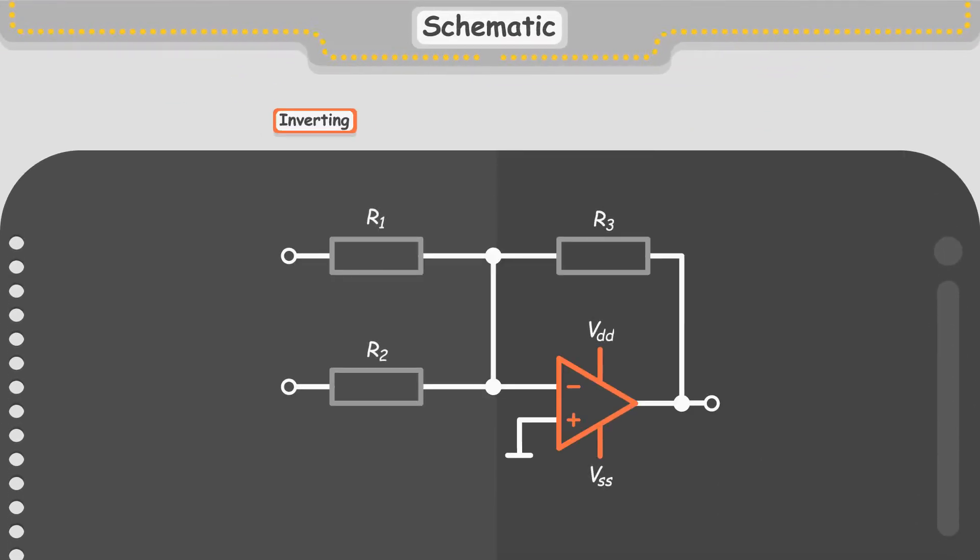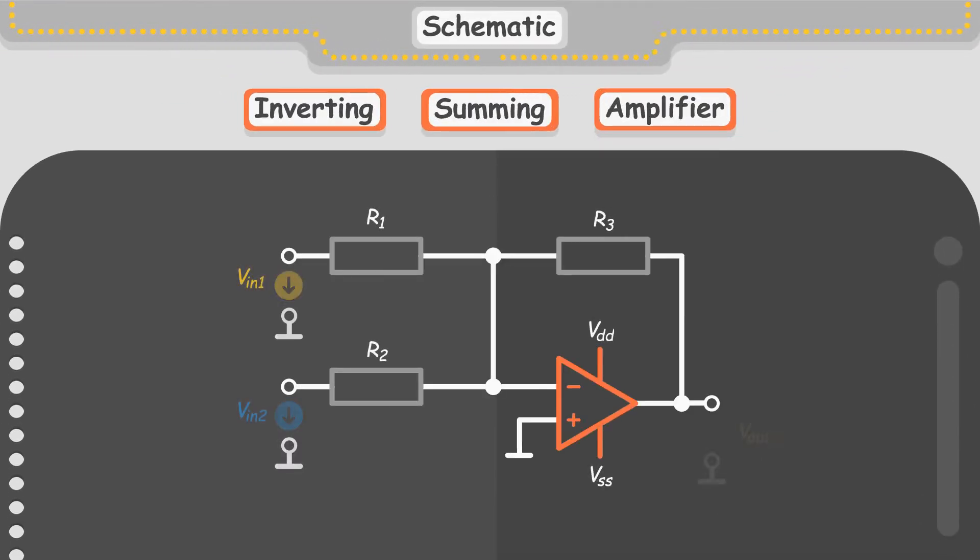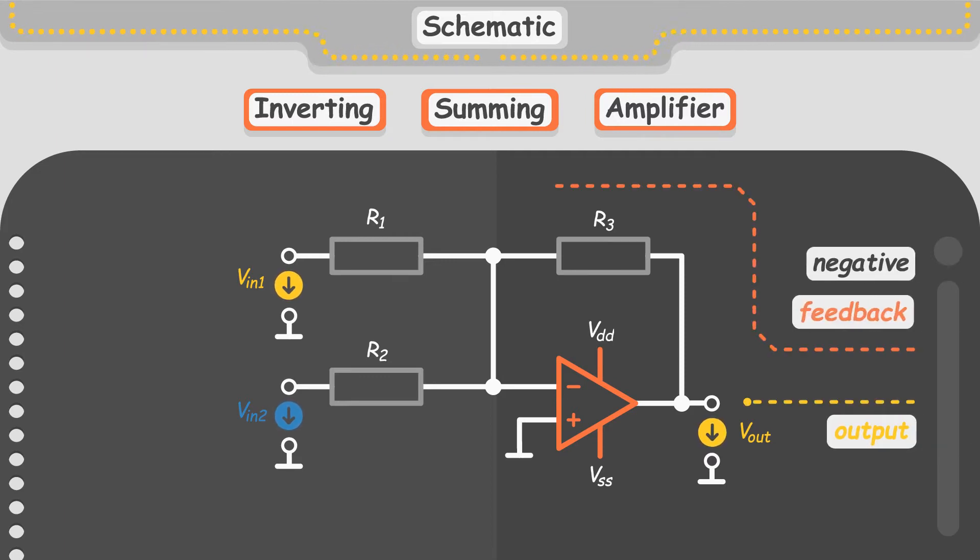This is the schematic of the inverting summing amplifier. It is a relatively easy circuit. The output is fed back to the negative terminal of the op amp, while the positive terminal is connected to ground.